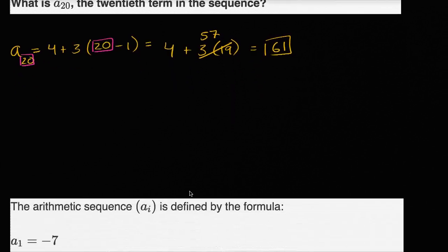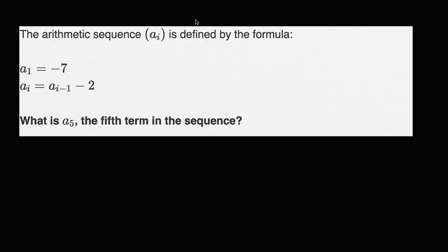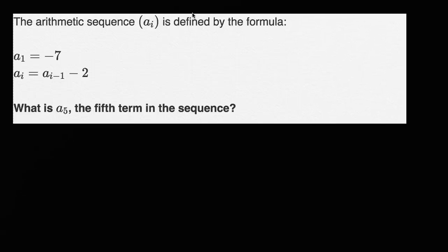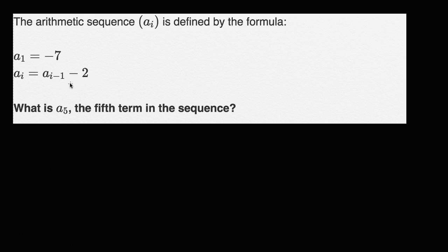Let's do another one of these. Here they've told us the arithmetic sequence a sub i is defined by the formula. They give us the first term a sub one, and they say every other term — a sub i — is defined in terms of the previous term. A sub i is going to be a sub i minus one minus two. So this is actually a recursive definition of our arithmetic sequence.